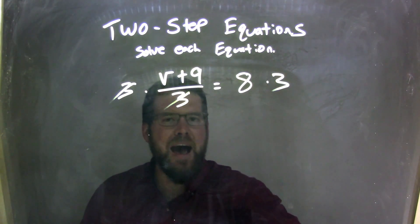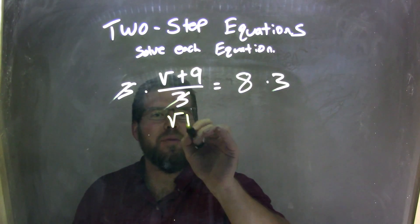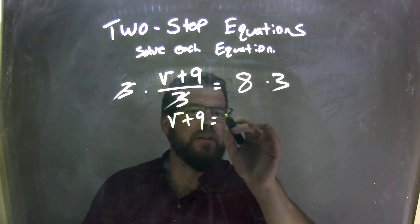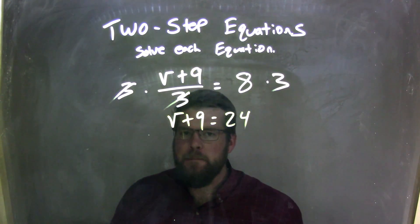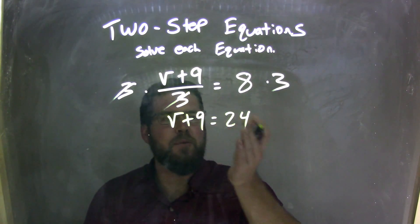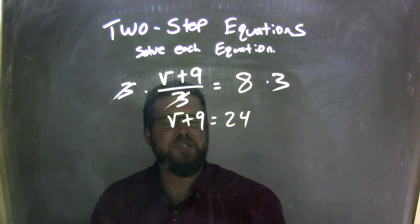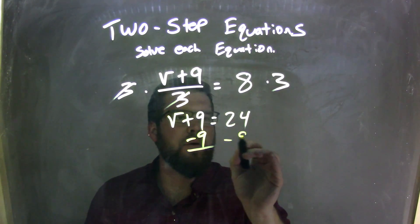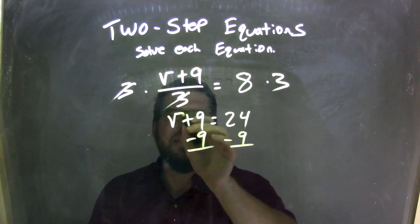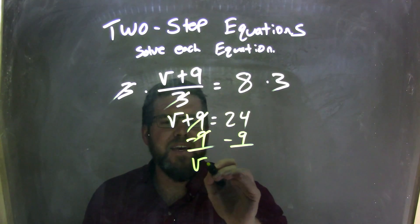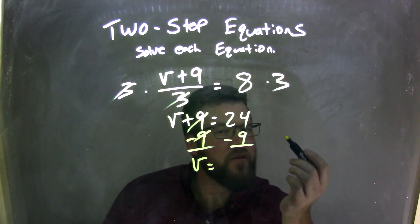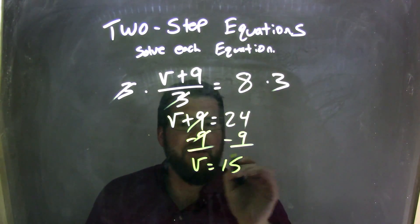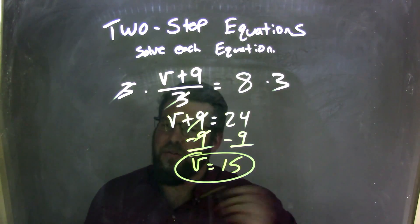That cancels the 3s out, leaving me with v plus 9 on the left, and 8 times 3 being 24 on the right. Now I have v plus 9 equals 24. The opposite of that addition is subtraction — subtract 9 from both sides. The 9s cancel, leaving v on the left, and 24 minus 9, which is 15. So v equals 15 is my final answer.